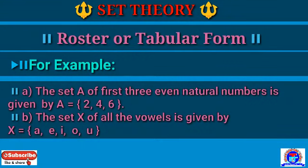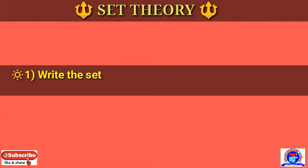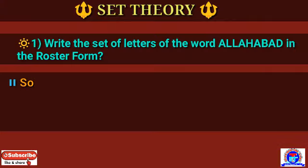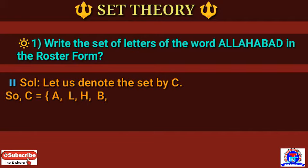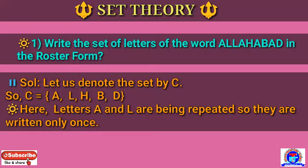Another example: write the set of letters of the word ALPHABET in roster form. Let us denote the set by capital C. So we write C = {A, L, H, B, E, T}. Here, the letters A and L are being repeated, so they are written only once.